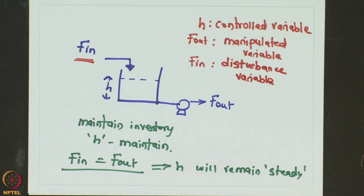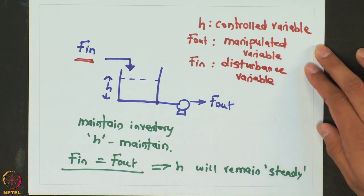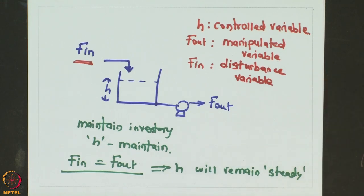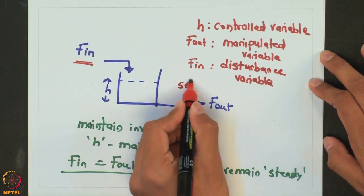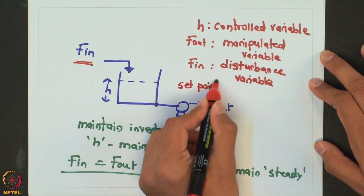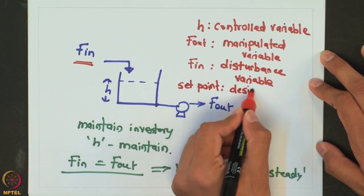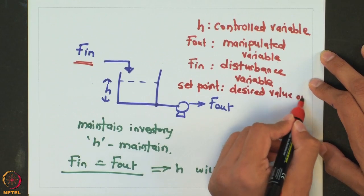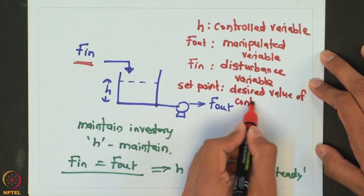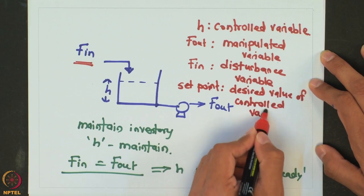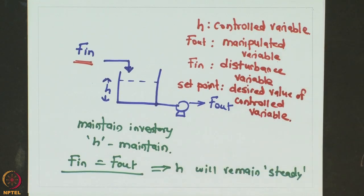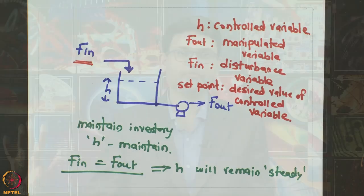And lastly, there is always some set value or desired value at which we want the controlled variable to be. In this case, the desired value of level was around 50 percent. So that desired value is known as the set point value. Going forward, we will be using this nomenclature. Thank you.